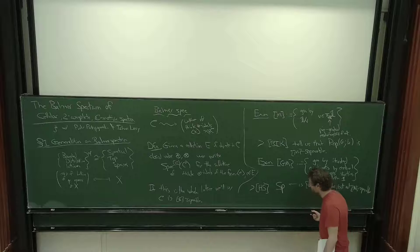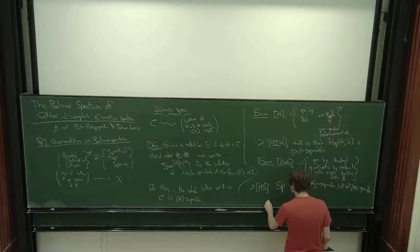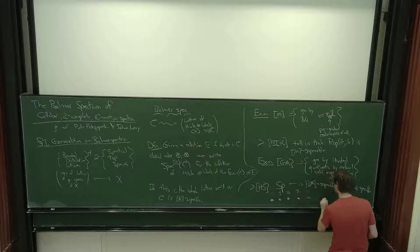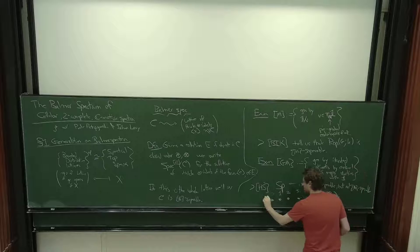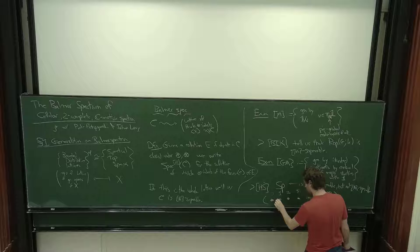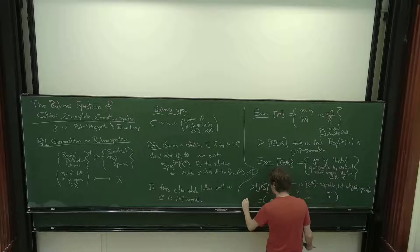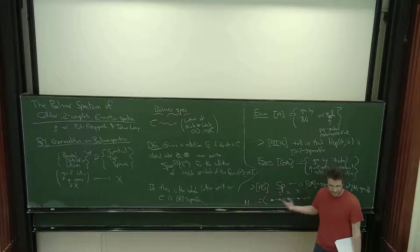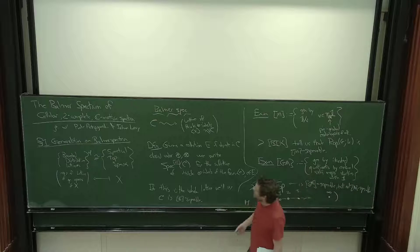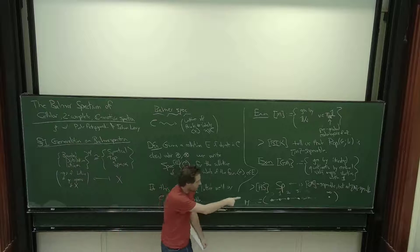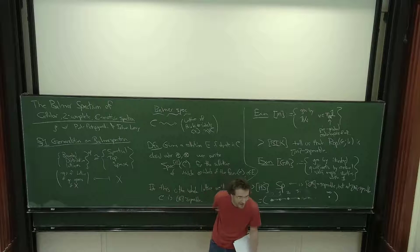As an example: due to Hopkins and Smith, in the category of spectra, if we allow ourselves to start with the sphere spectrum and iteratively quotient by central self-maps, we get type-n complexes. We know this allows us to see all of the closed sets with quasi-compact complement of the Balmer spectrum. So spectra is GM-separable but not M-separable. Let me draw a picture of the Balmer spectrum of spectra: we have a point at height zero, a point at height one, continuing to height infinity, with specializations between them. I'll call this space H.